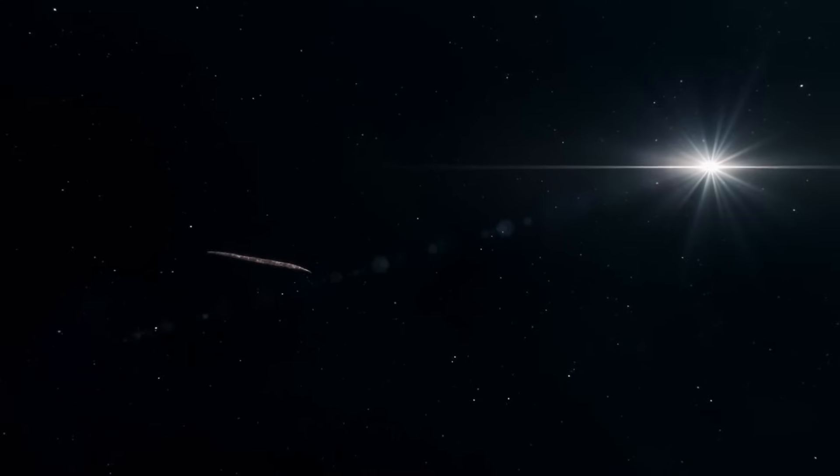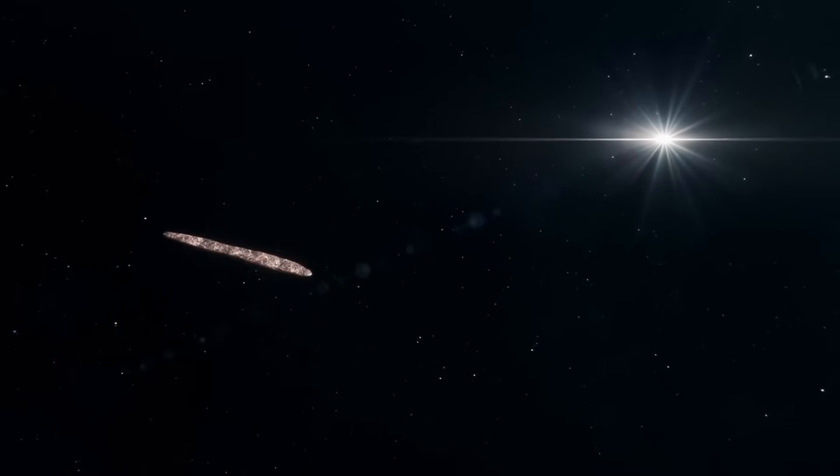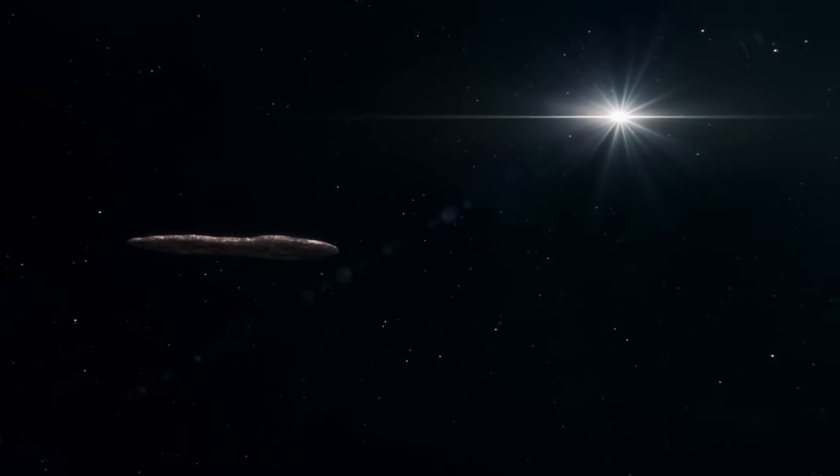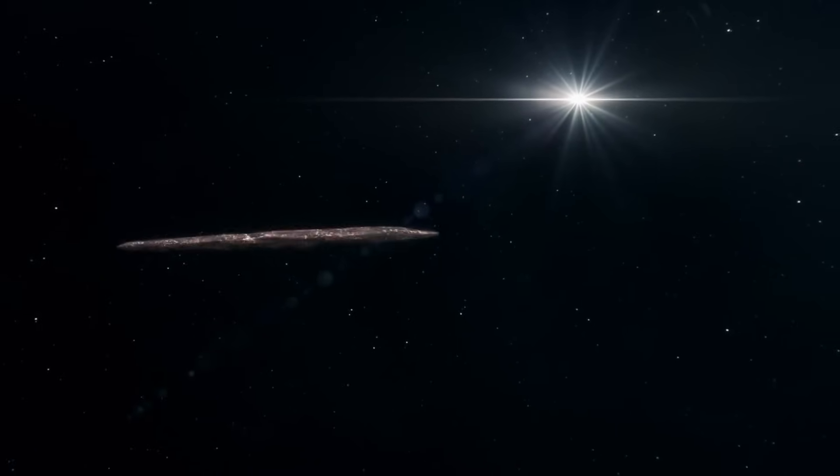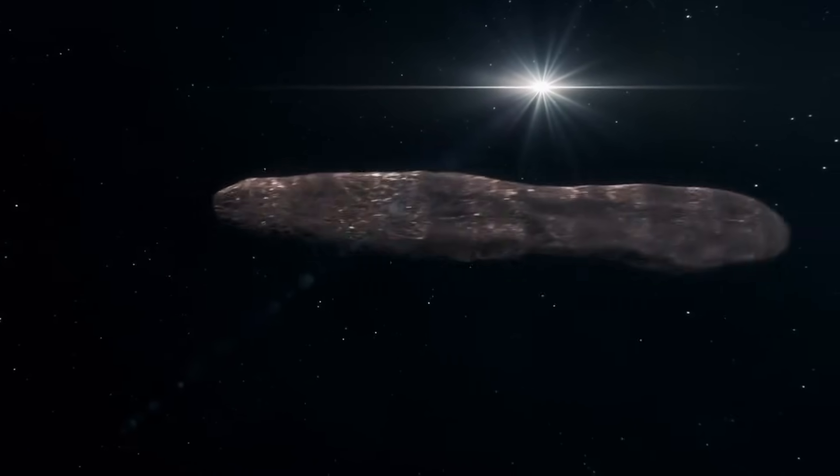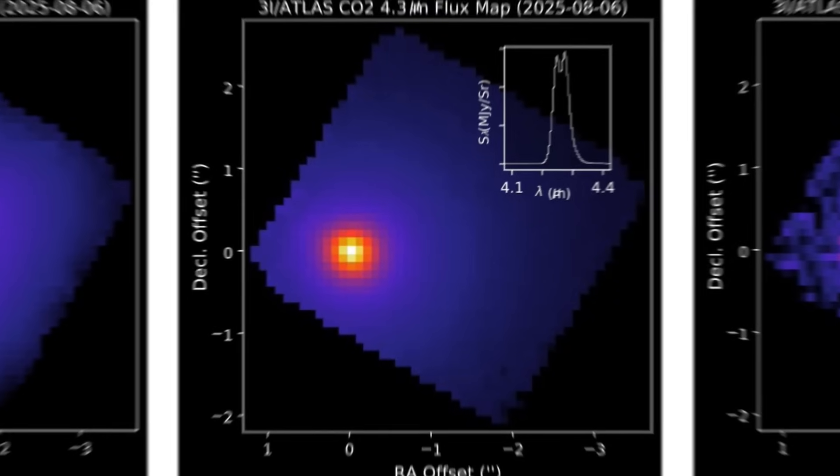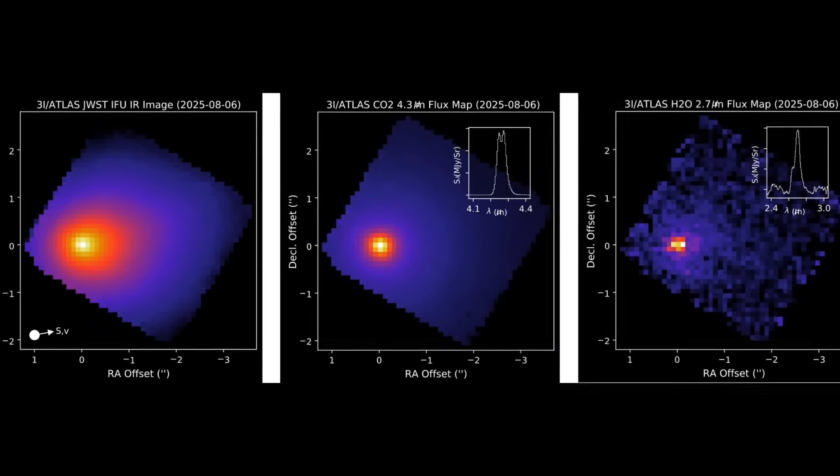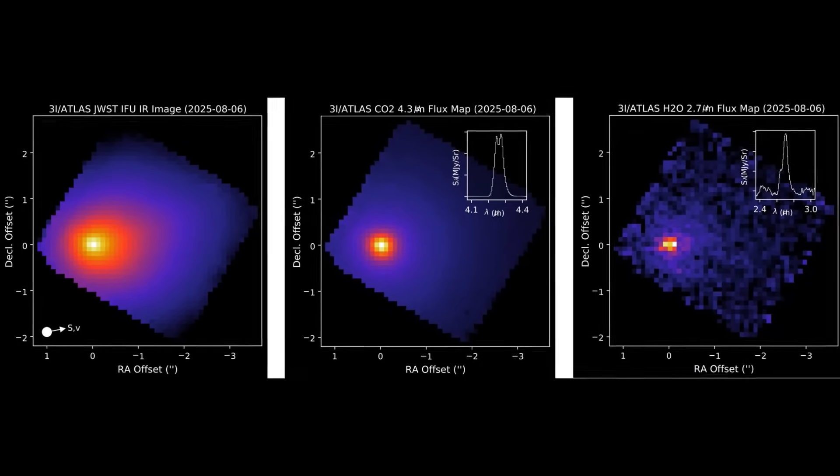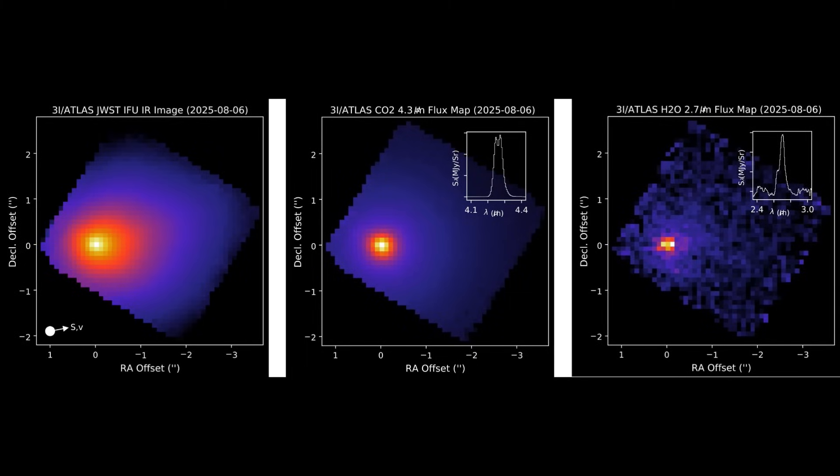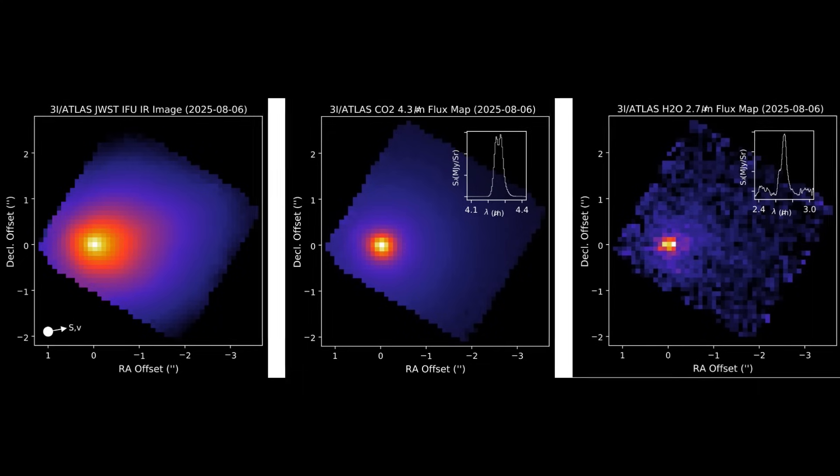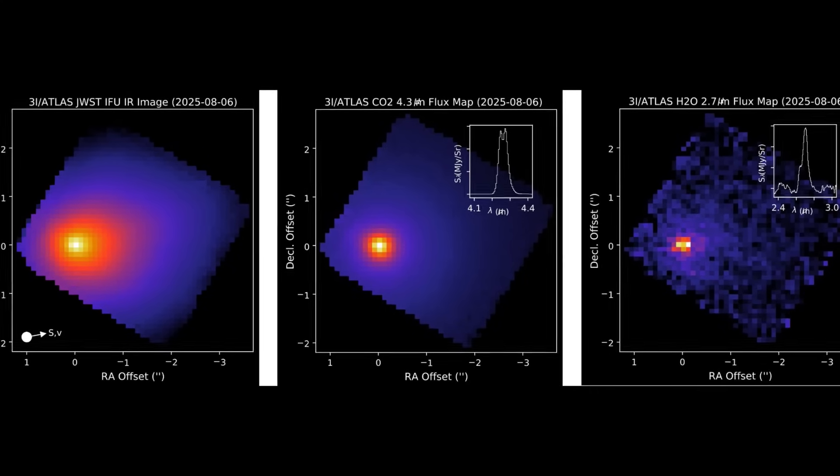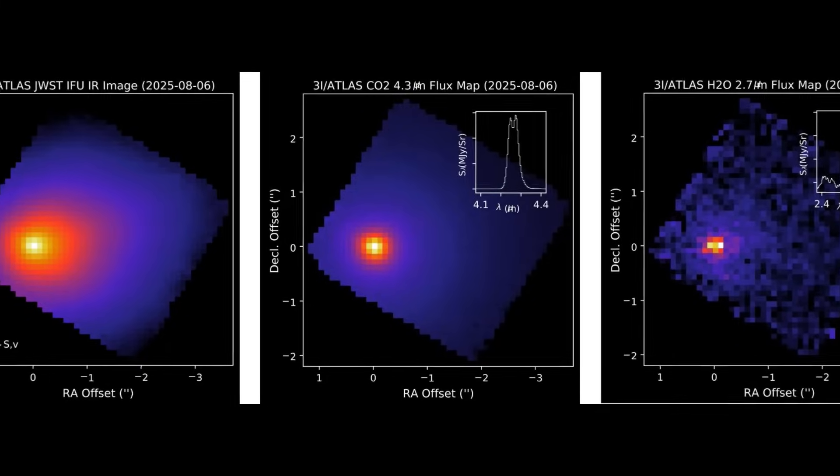The speed also prompts deeper questions. What force set it moving at such a rate? Planetary systems can indeed sling bodies into space through gravitational encounters. But there are limits to the speeds those processes can generate. 3i Atlas seems to be moving beyond those limits, hinting at either an exceptional set of circumstances, or some additional factor. If natural, it may reveal processes we have not yet considered. If not, it edges closer to the speculative possibility of propulsion.